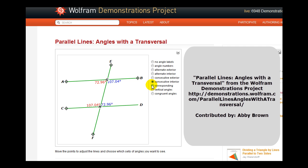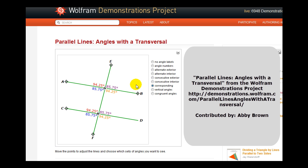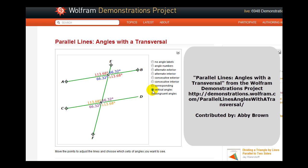Next, we have the corresponding angles in red, blue, purple, and orange. You'll notice that the corresponding angles are equal in measure. And then lastly, we have the vertical angles in red, blue, orange, and purple. Vertical angles are also equal in measure, or congruent.